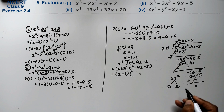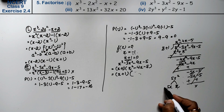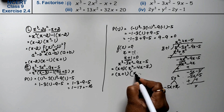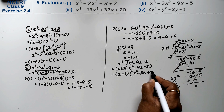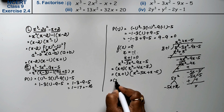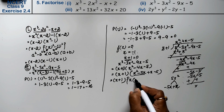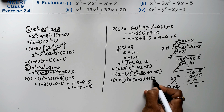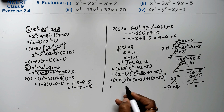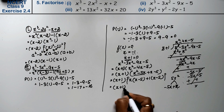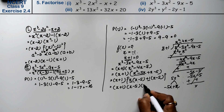After sign change and subtraction, we get minus 5x minus 5. Dividing minus 5x minus 5 by x plus 1, we take minus 5 as the next quotient term. Minus 5 times x plus 1 gives minus 5x minus 5. Both terms cancel, giving zero. So x cubed minus 3x squared minus 9x minus 5 equals x plus 1 times x squared minus 4x minus 5. Taking x common from the first two terms gives x minus 5, and taking 1 common from the last two gives x minus 5. So the final factored form is x plus 1 times x minus 5 times x plus 1, which is the answer.